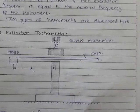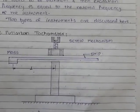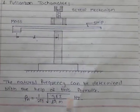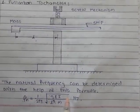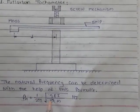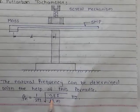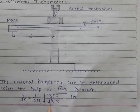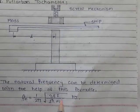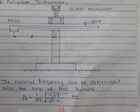The strip has different frequencies for its different lengths. The natural frequency can be determined with the help of this formula: fn equals 1 upon 2π under root 3EI upon l cubed m, hertz, where each symbol has its usual meaning.